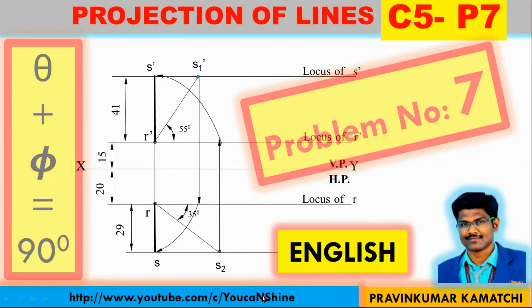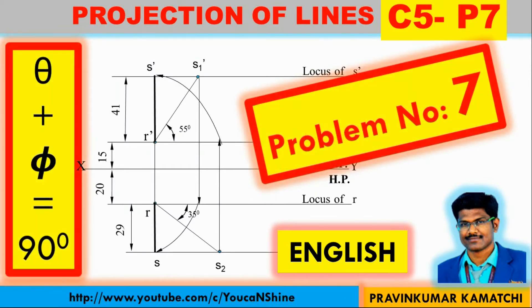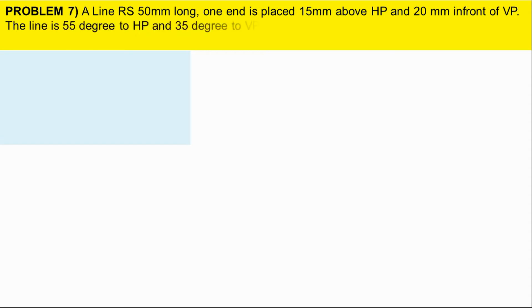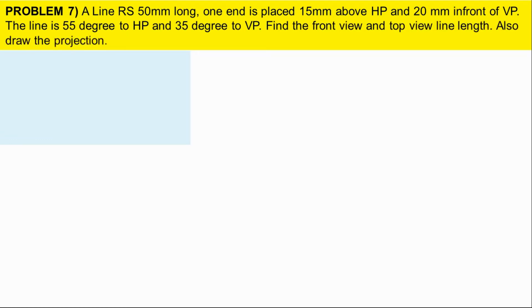Welcome guys. In this video we are going to learn the projection of lines problem case 5 and problem number 7. Here the final projector will look like a straight line, and theta plus pi equals 90 degree. The line is 50mm long, one end is placed 15mm above the HP and 20mm in front of VP. The line is 55 degree to HP and 35 degree to VP. Find the front view and top view line length, and also draw the projections.